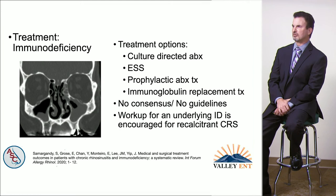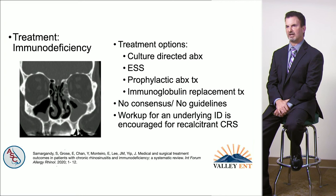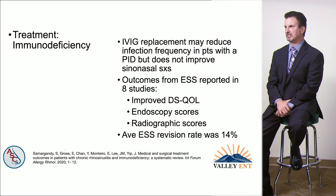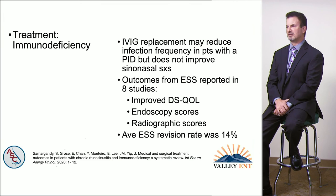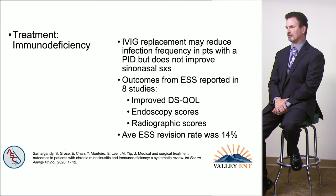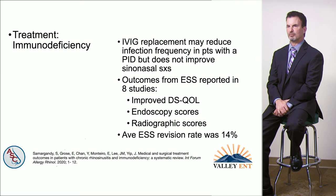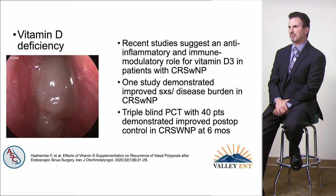Treatment options for patients with immunodeficiency include standard care like culture-directed antibiotics and sinus surgery, as well as prophylactic antibiotics or IVIg replacement, though there is no consensus or guideline for this population. A study demonstrated that IVIg reduced the frequency of infections but did not correlate to improved symptoms. Eight studies looking at sinus surgery in immunodeficiency patients demonstrated improved quality of life and improved endoscopy and radiographic scores.